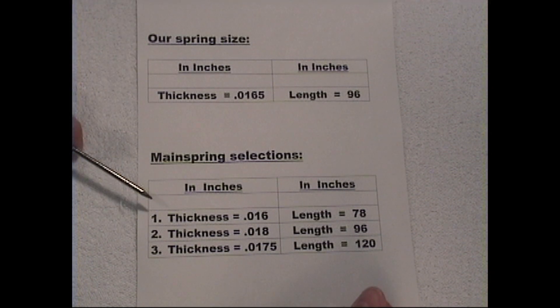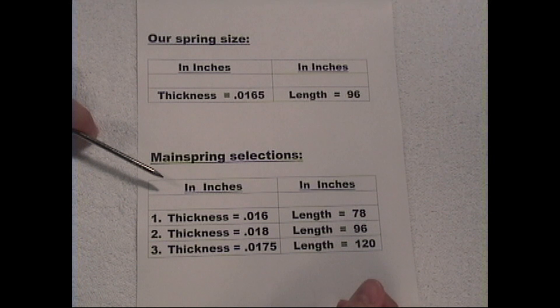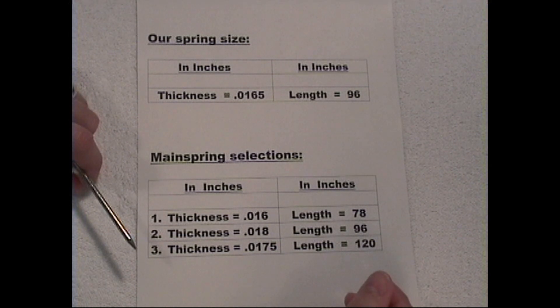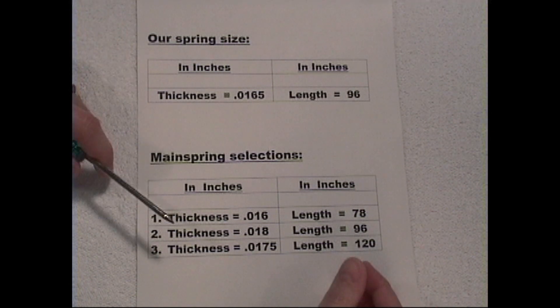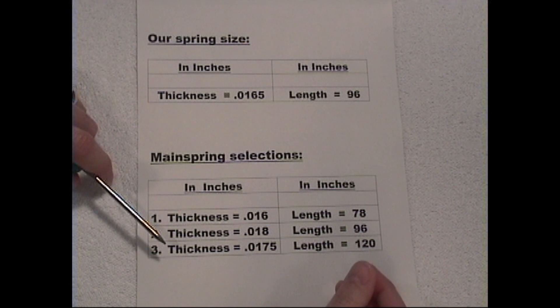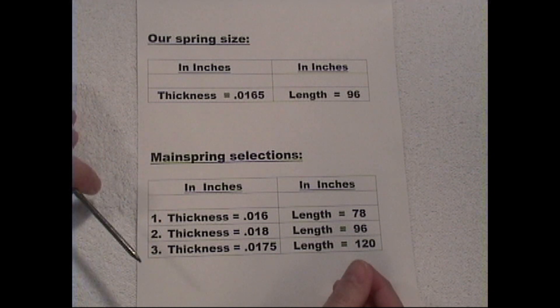Now I looked through several supply catalogs to see what kind of a mainspring we could use to replace this one. I did not find an exact match, but I did find three other mainsprings that could be possible matches, and that's what we're going to discuss. Because many times you won't be able to find through the clock supply houses the exact same spring. So what do you do? You have to know what to deal with in terms of length, width, and thickness in order to make a comparable spring that will work for your movement.